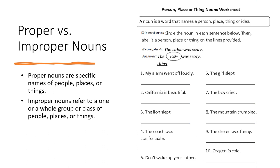So let's look at the directions here. In the example, 'the cabin was scary.' The word cabin would be a noun because the word is a thing. Now, would it be a proper noun or an improper noun? That's right — it would be an improper noun. Some people call it a common noun because it does not tell us the name of the cabin.